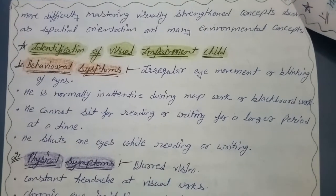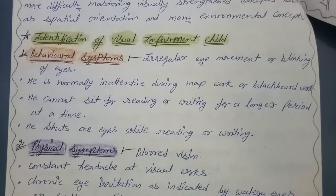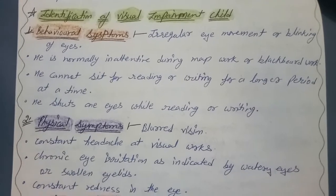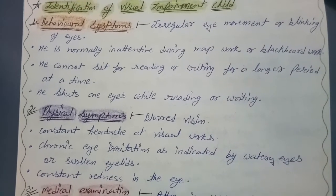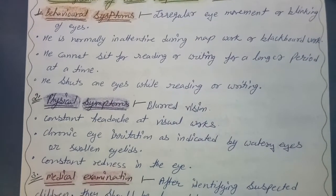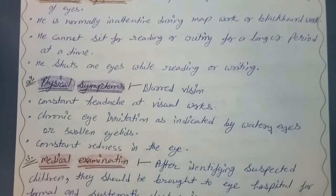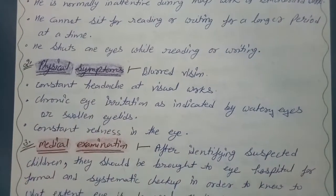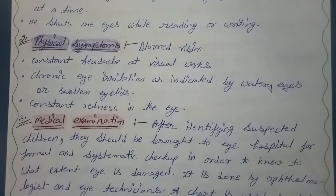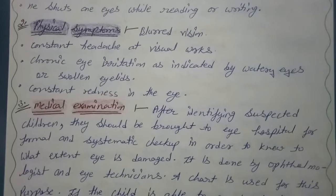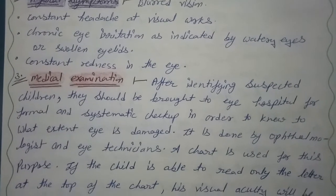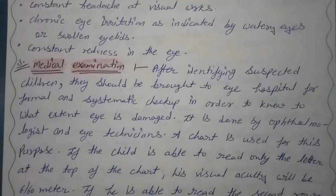Identification of a visually impaired child. First point is behavioral symptoms. Second point is physical symptoms. Third point is medical examination.